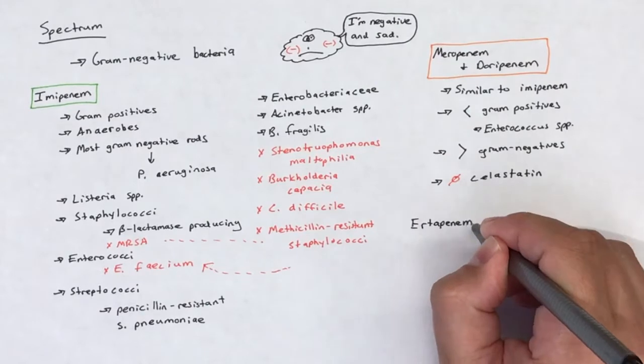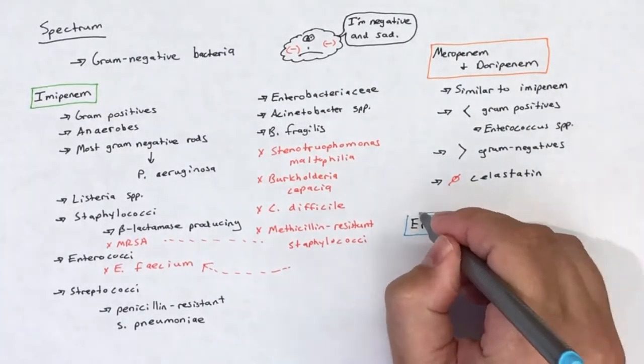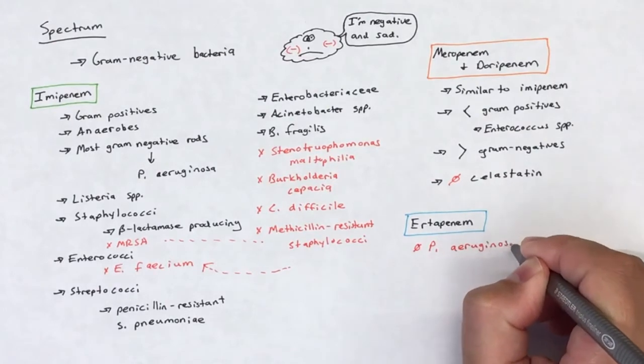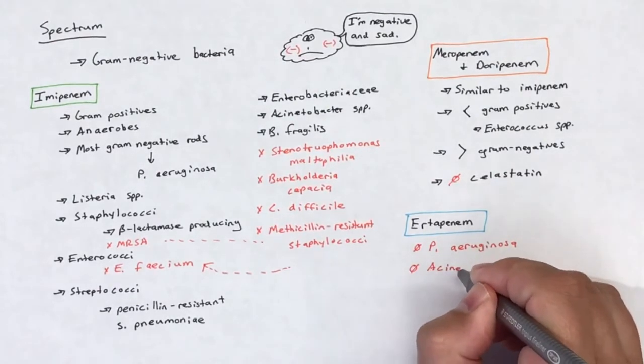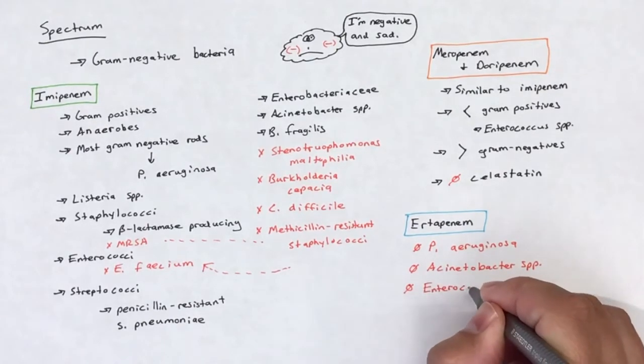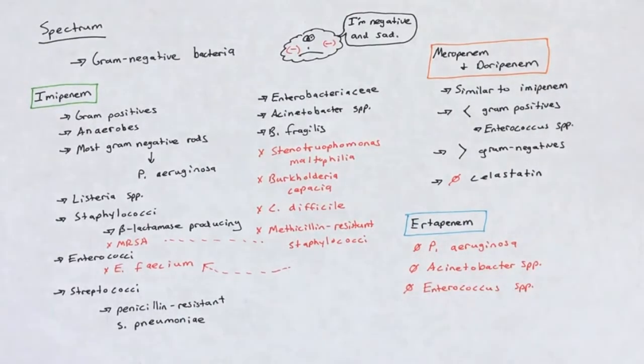Ertapenem fits the mold of the carbapenem-class spectrum of activity with three notable differences. Ertapenem does not have activity against P. aeruginosa, and ertapenem does not cover Acinetobacter species. Lastly, ertapenem has inferior activity against Enterococcus species.